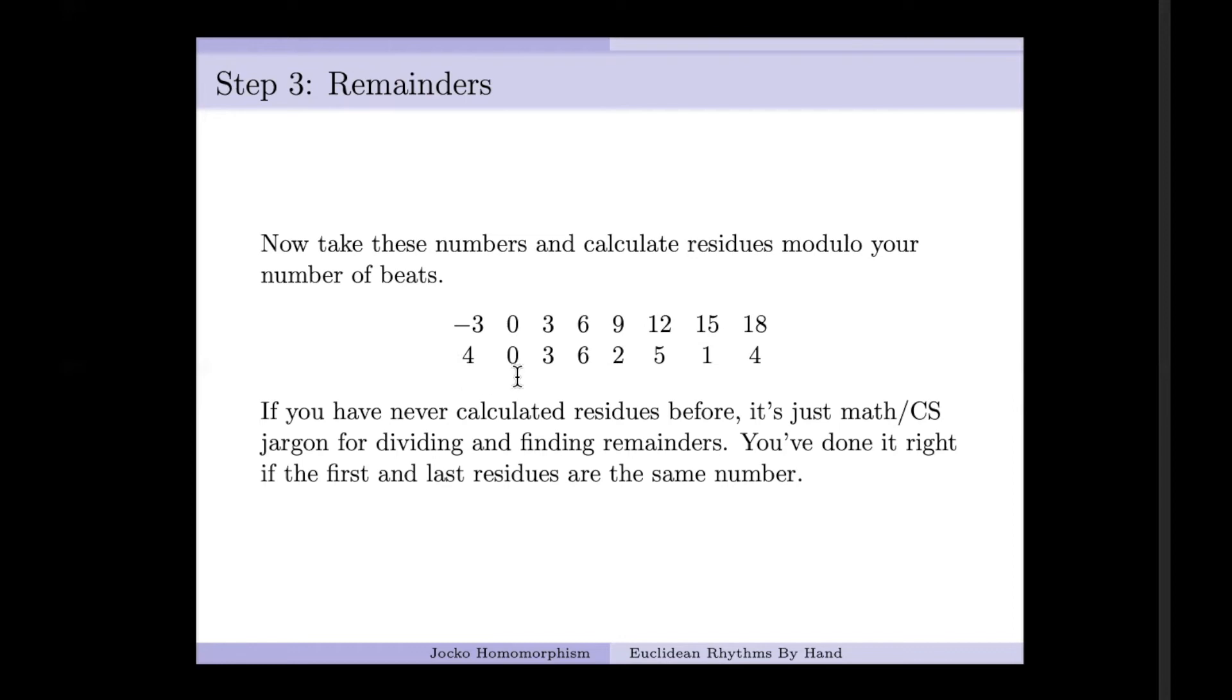Zero has a remainder of zero. Three has a remainder of three. Six has a remainder of six. And now things get a little bit more interesting. Since we're dividing by seven, nine has a remainder of two. Twelve has a remainder of five. Fifteen has a remainder of one. And eighteen has a remainder of four. One of the ways you can check that you've done this all correctly is that your very first remainder, the weird one, should be the very same number as your last remainder. So things are looking good.